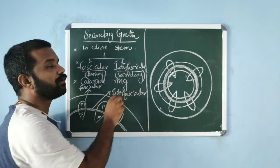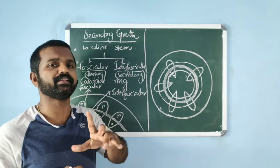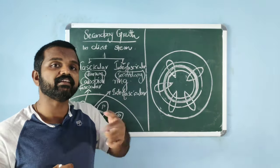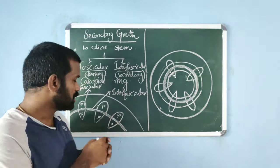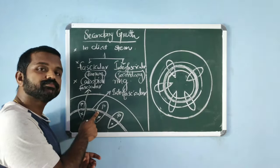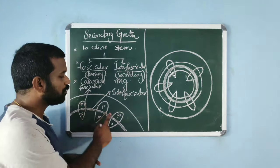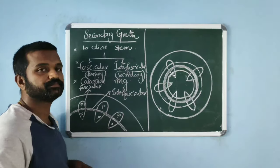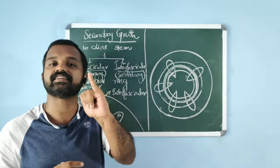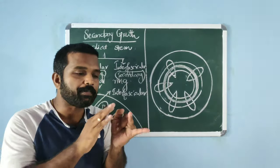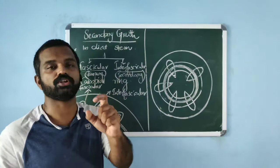Interfascicular cambium is actually formed from medullary rays. Medullary rays are nothing but parenchyma, which undergoes de-differentiation to form interfascicular cambium. So fascicular cambium and interfascicular cambium join together to form a cambium ring. Vascular cambium is thus partially primary — fascicular cambium — and partially secondary — interfascicular cambium — in origin.